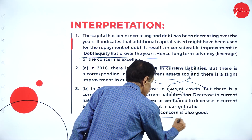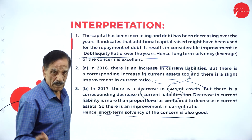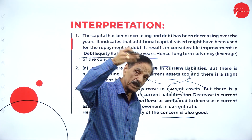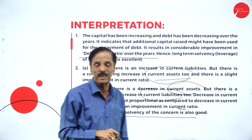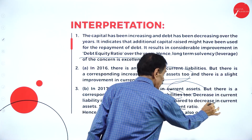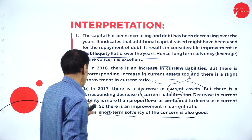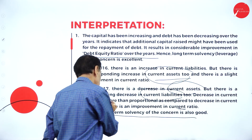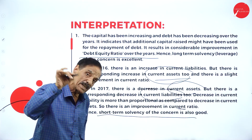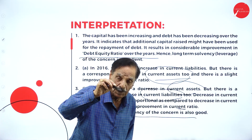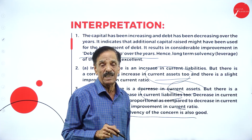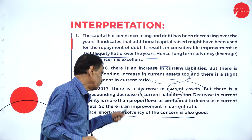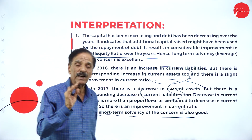The decrease in current liabilities is more than proportional compared to the decrease in current assets, so there is an improvement in current ratio. Hence the short-term solvency of the concern is very good — current assets decreased, current liabilities also decreased, but current liabilities decreased more when compared to current assets. It is a good sign showing that short-term solvency is also very good.